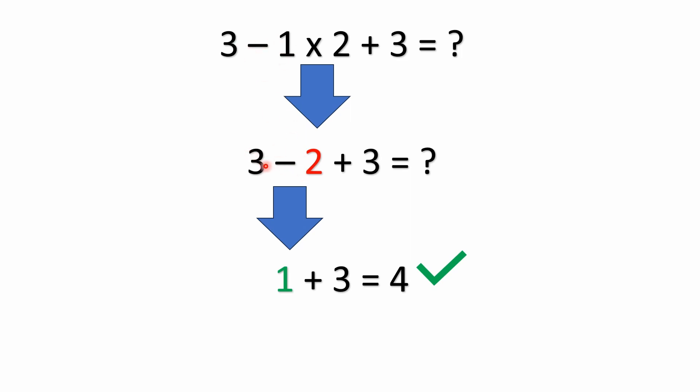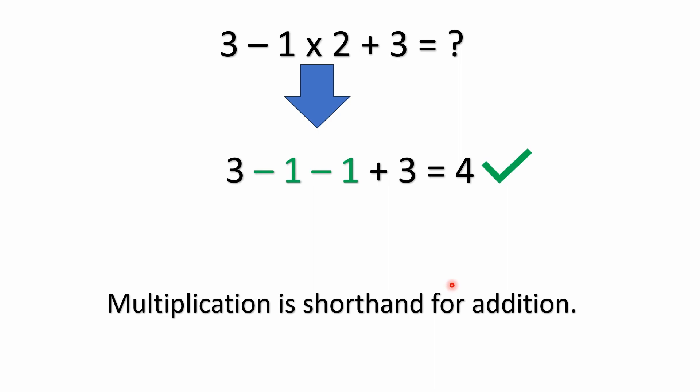Remember, we've got the minus sign here. 3 minus 2 plus 3 equals what? Well, that's pretty simple. 3 minus 2 is 1, 1 plus 3 is 4. So the answer to this problem would be 4.